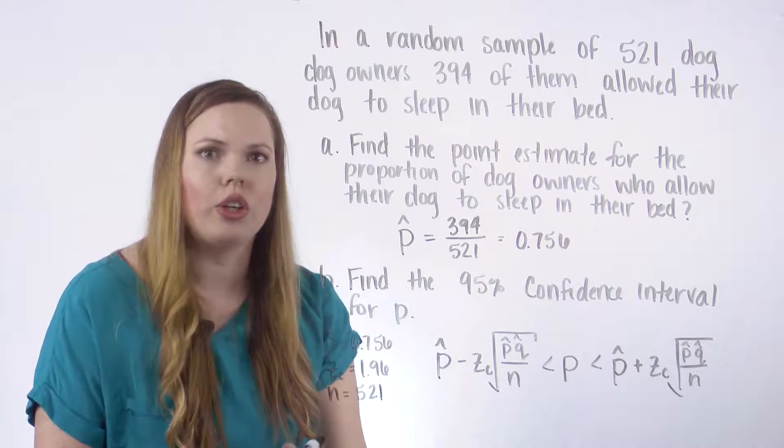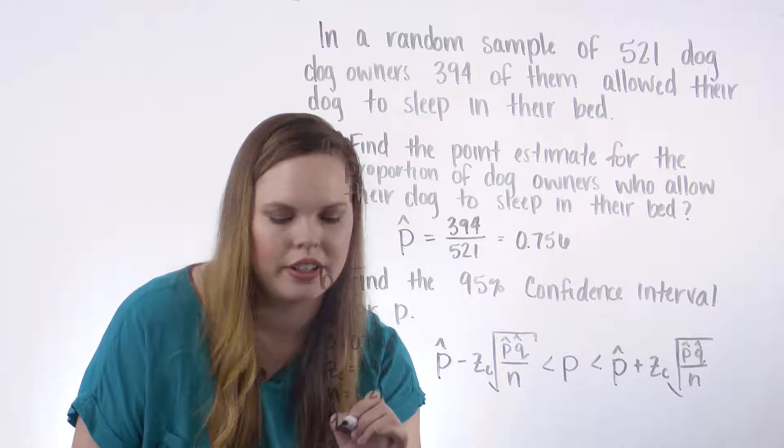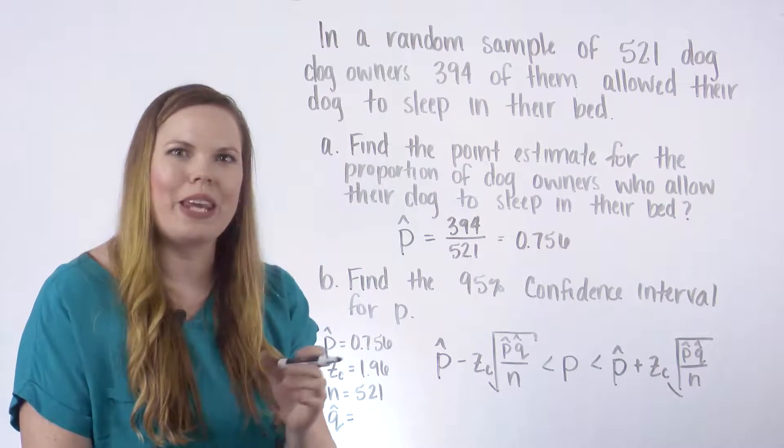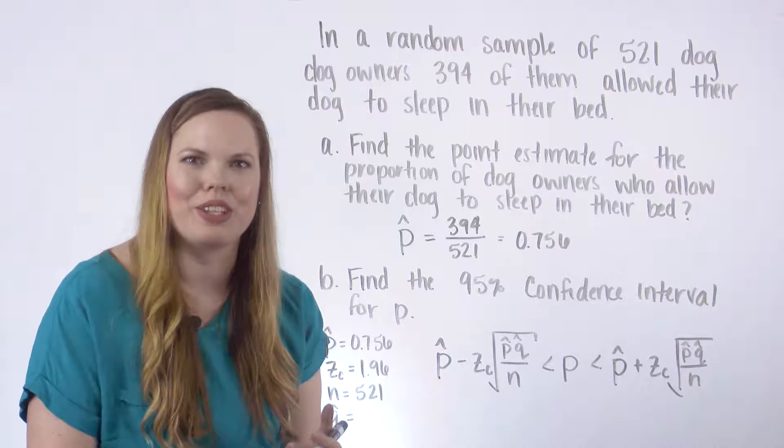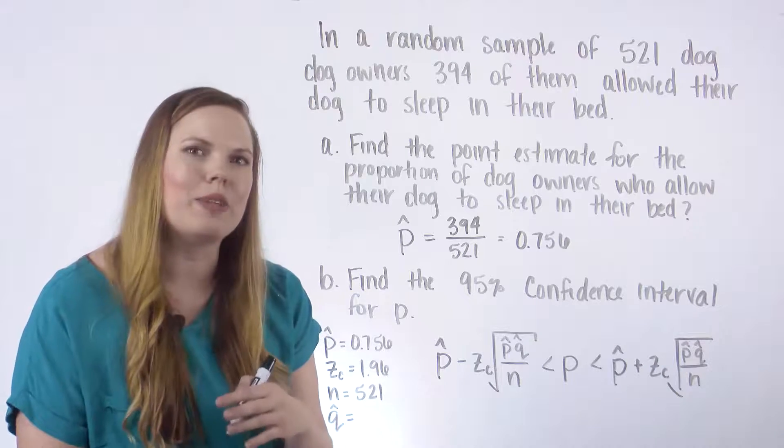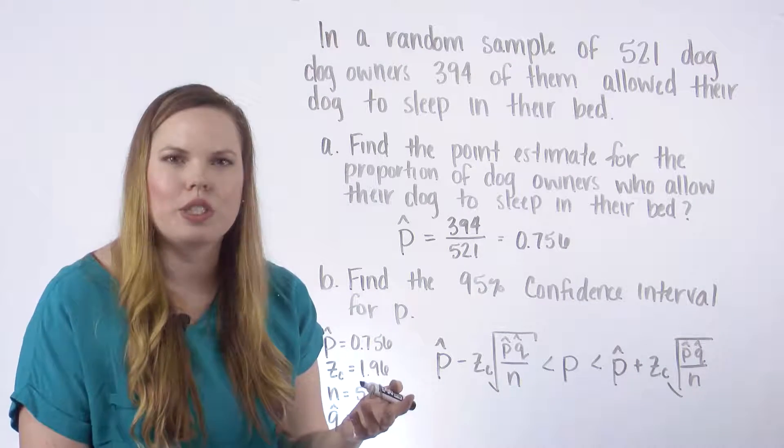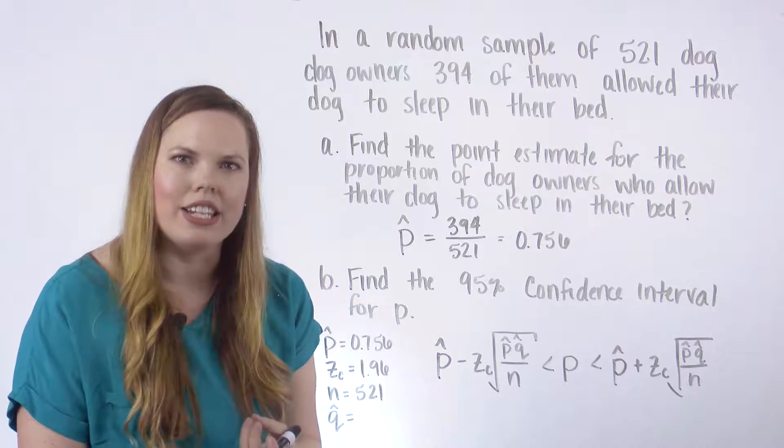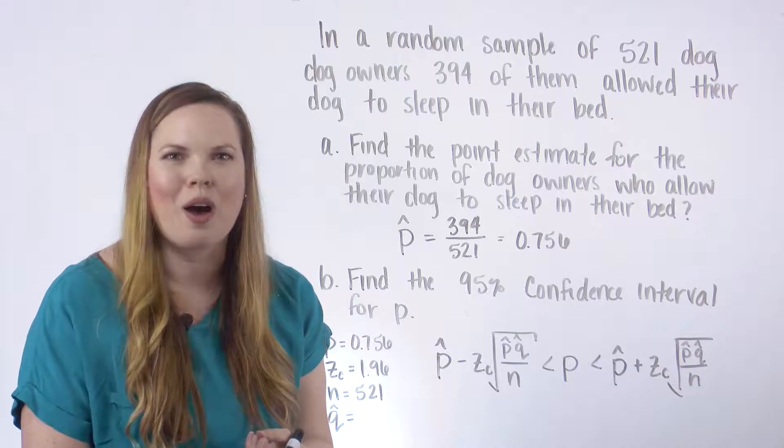And then we need Q hat. We all know that P hat and Q hat are complements of each other, just like P and Q in a binomial are complements of each other. P is the probability of a success. Q is the probability of a failure. They should add together to be one. That's what complements do. They cover the sample space.